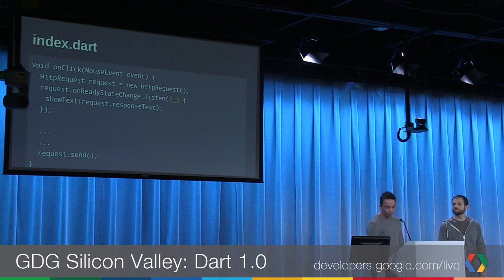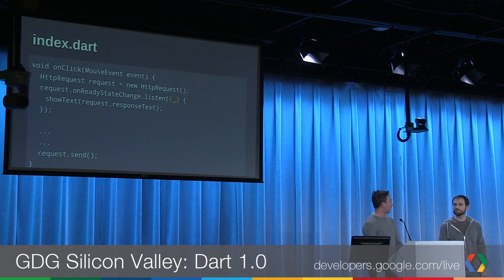Here's the onClick function. If you've coded in JavaScript, this should look extremely familiar. We're creating the HTTP request, we have the onReadyStateChange so when we send the request we can get a response back. There's more complete code — this demo is posted, we just didn't stuff it all into these slides. When we get the response back, we're going to use it to populate the form by calling the showText method.